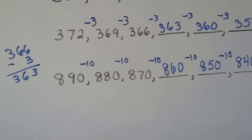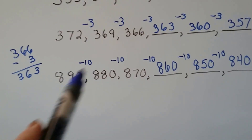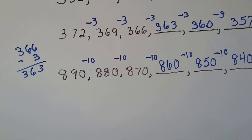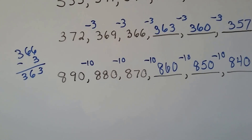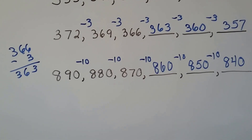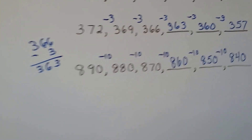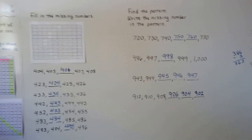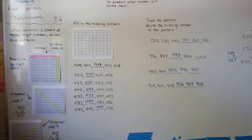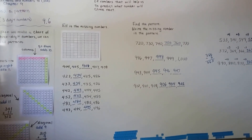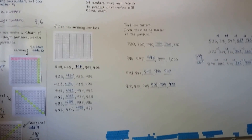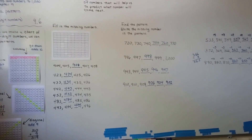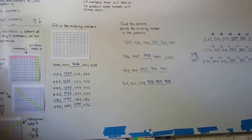The way to find a pattern is to find the change between the first two numbers, then the change between the second and third numbers, and if you have more, check the third and fourth to see if there's a pattern that keeps happening — then just follow it. If it's plus 10, keep adding 10; if it's minus 9, keep subtracting 9. You can use the hundreds chart to help, and there are blank ones online. We'll continue talking about patterns and numbers to a thousand — see you next video!